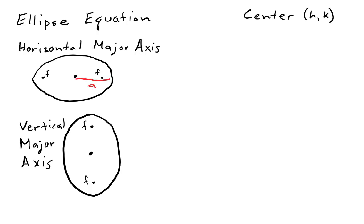The distance from the center to the end of the major axis is called A. The distance from the center to the end of the minor axis is called B. The major axis is always the longer one and it's always called A, whether that is horizontal or vertical. The minor axis is always the shorter one and it's always called B, whether that is horizontal or vertical.